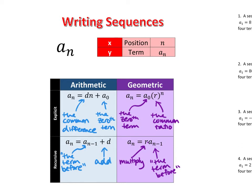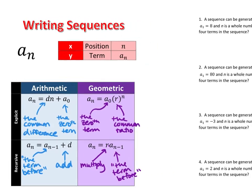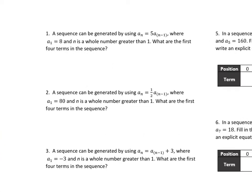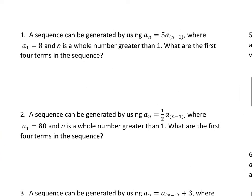We're going to be using both the recursive and the explicit version of these arithmetic and geometric sequences to write and use the equations of sequences. First, let's make sure we understand the recursive patterns and how to continue to create sequences, just like we did last time. Number 1 says a sequence can be generated by using a sub n equal to 5 times a sub n minus 1, where a sub 1 is 8, and n is a whole number greater than 1. What are the first four terms in the sequence?